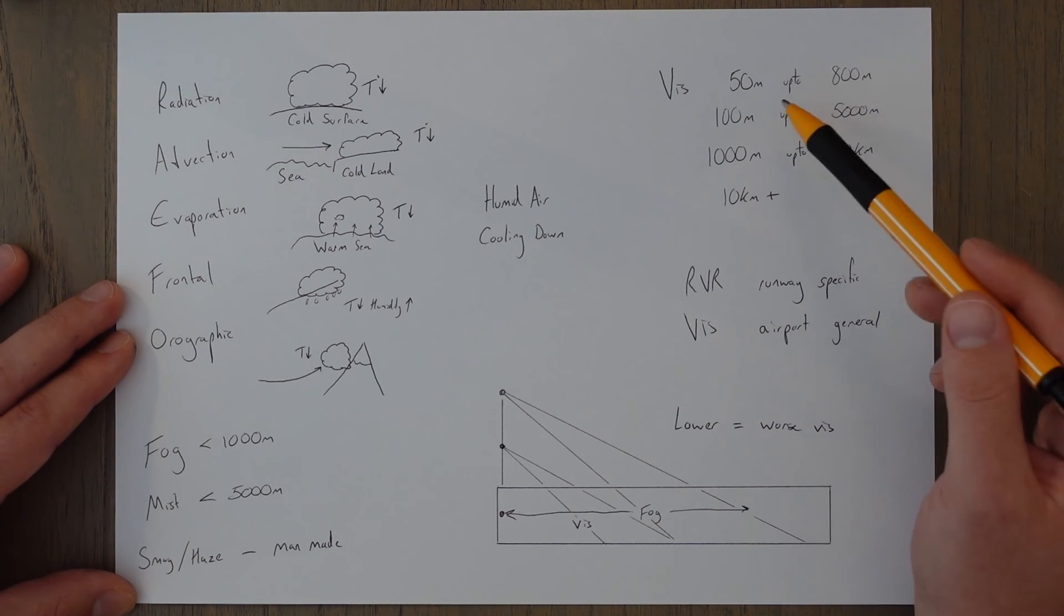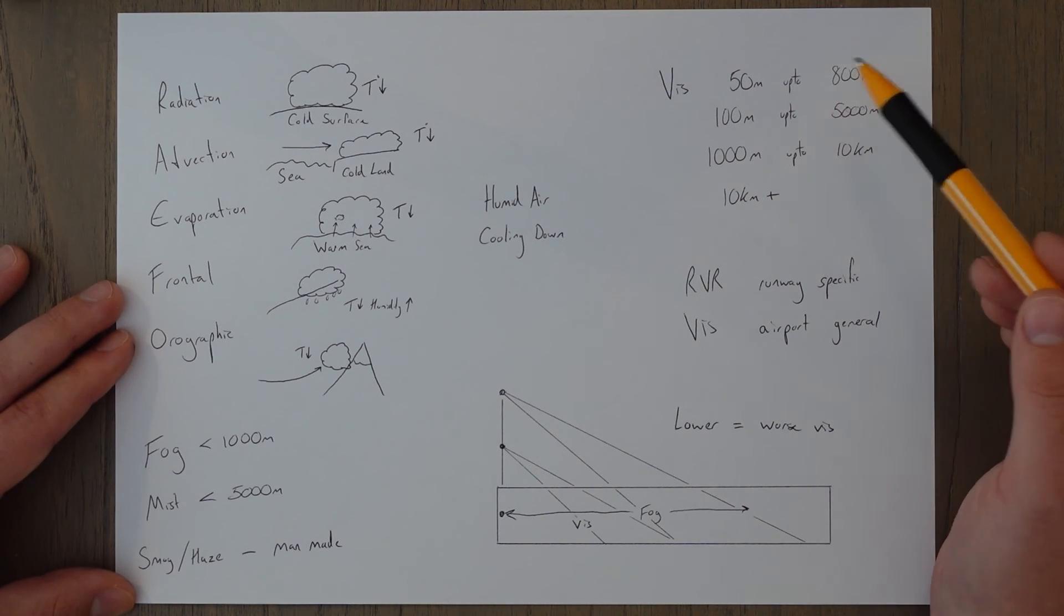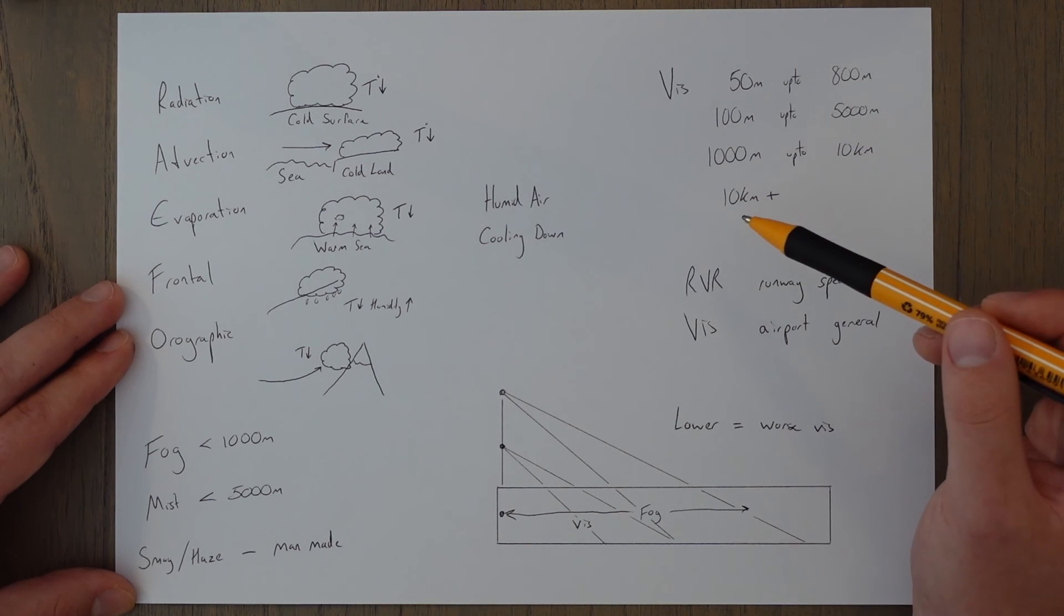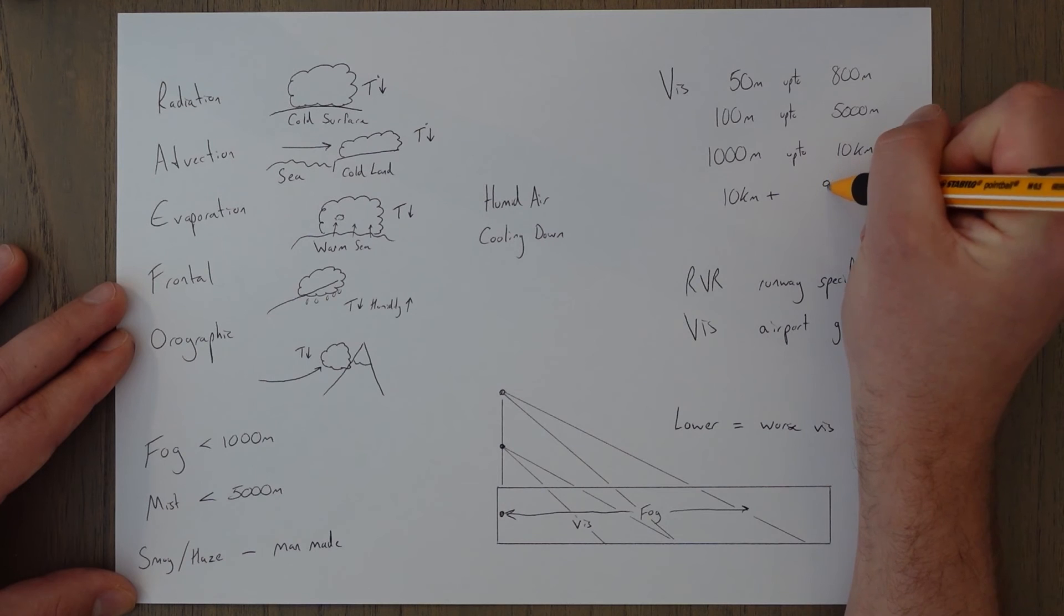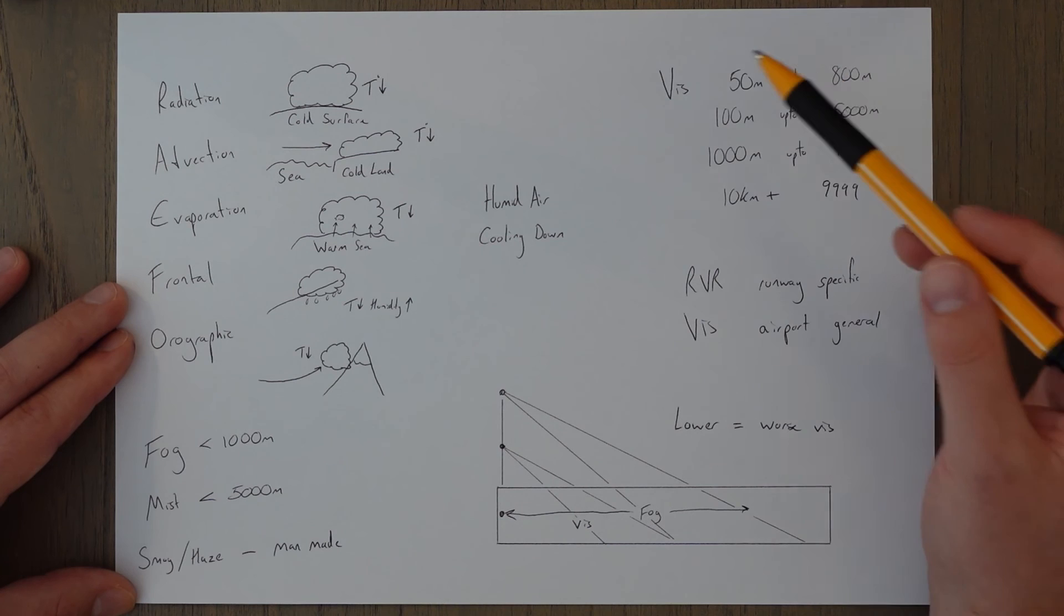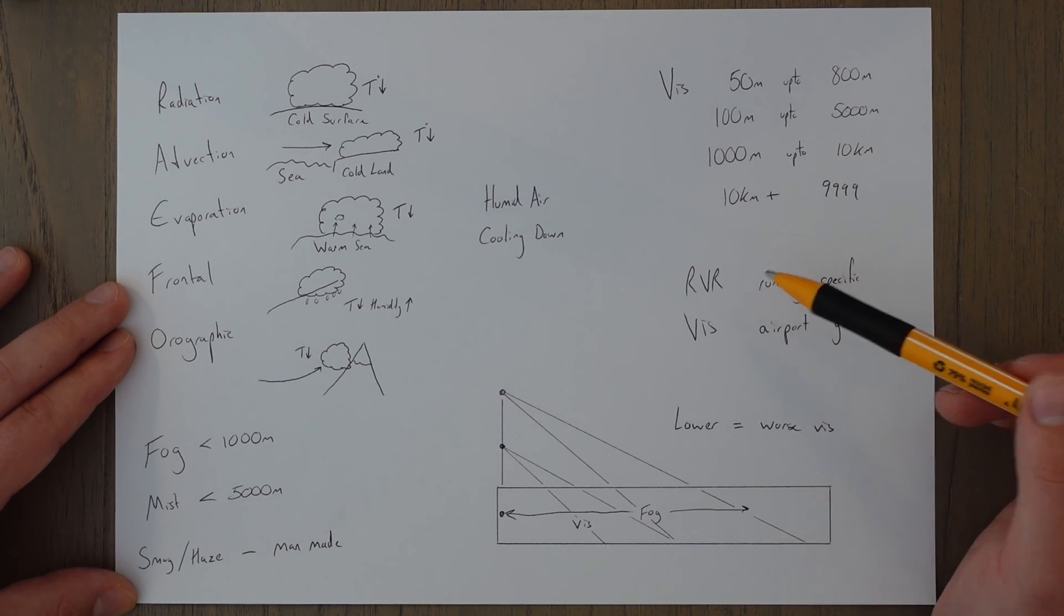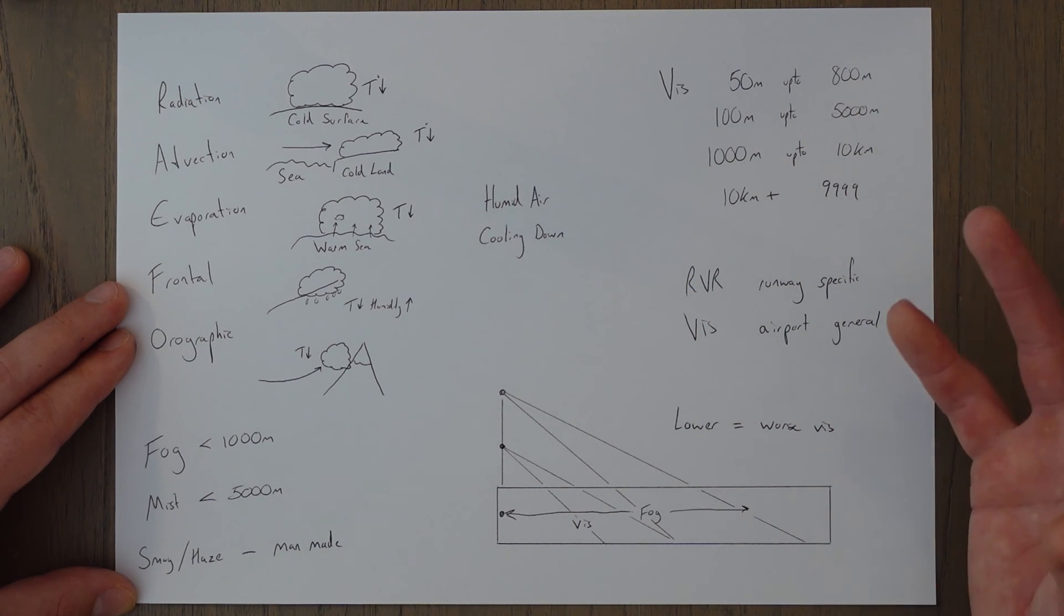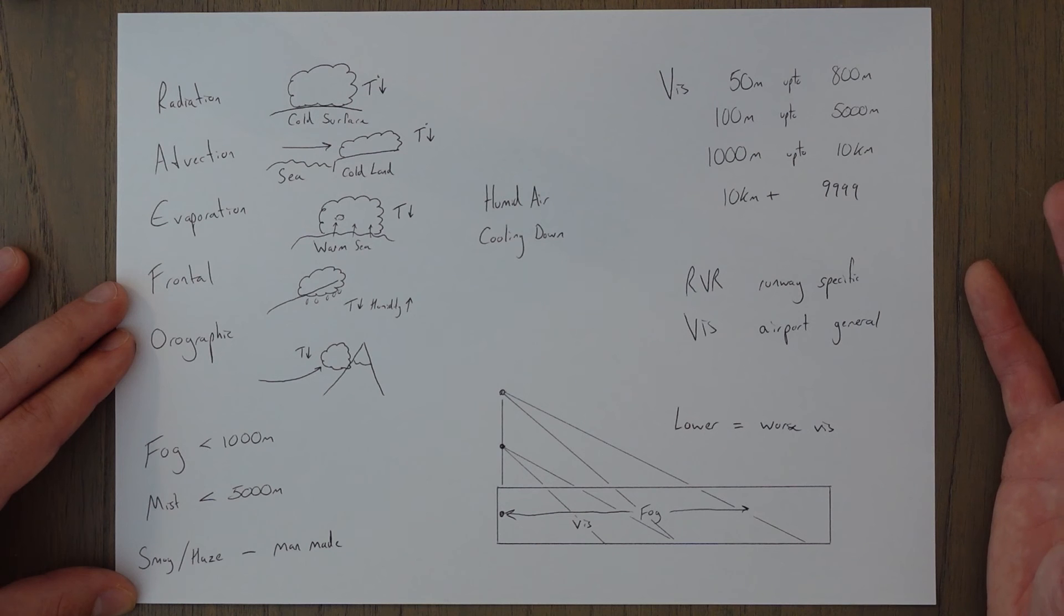Visibility at airports is reported in 50 meter increments up to 800 meters, 100 meter increments up to 5,000 meters, and a thousand meter increments up to 10 kilometers. And if it's more than 10 kilometers you'll see a 10k plus or you might just see four nines on a report. The difference between visibility and runway visual range is visibility is just airport general, whereas RVR is runway specific, which you might need a very accurate measure of to know if you can do a more accurate type of approach, for example using the automatic landing systems.